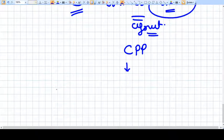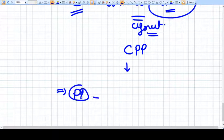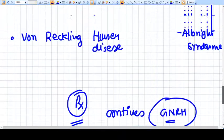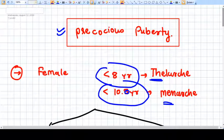In case of peripheral puberty we need to find the reason and treat that reason accordingly. So this is precocious puberty. Thank you.